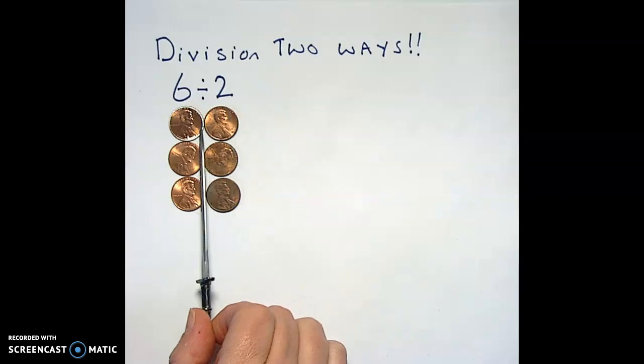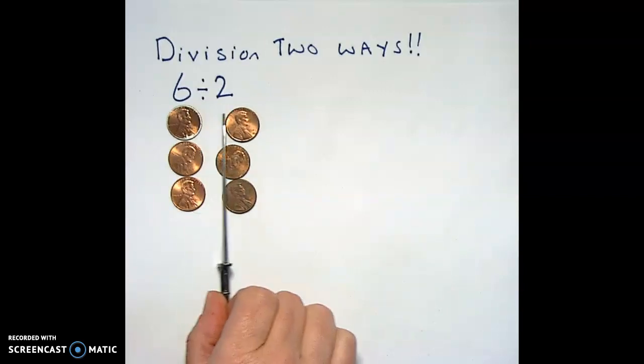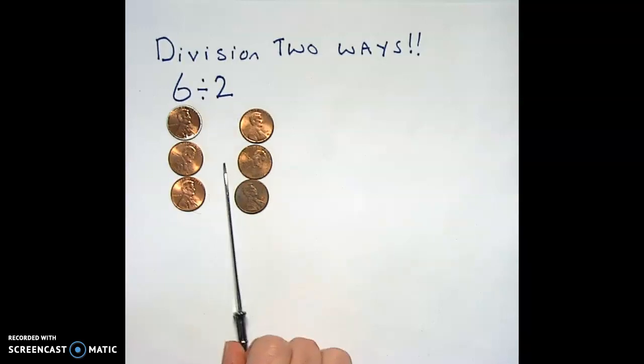So we've got 6 divided by 2, and one of the most common ways to do that is to take the group of six and break it into two groups that are even.